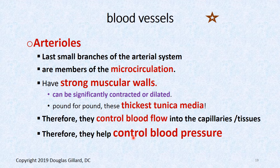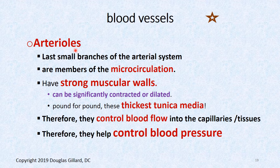The smallest member of the arterial system is the arteriole, which is part of the microcirculation. Arterioles pound for pound have more tunica media than any other blood vessel — they're very muscular. By contracting and relaxing, they control the diameter of the lumen, making them the key blood pressure regulators. In fact, one type of arteriosclerosis is named after arterioles, and arteriolar dysfunction is the most important cause of hypertension.